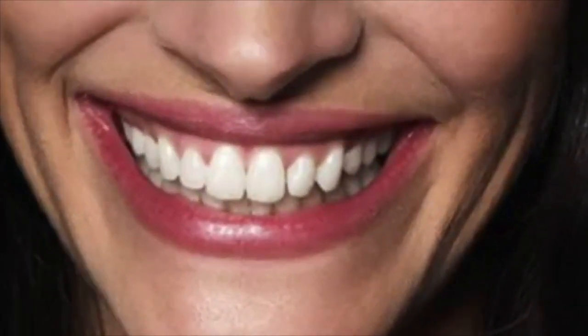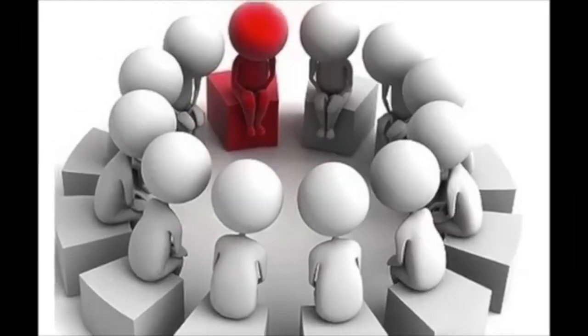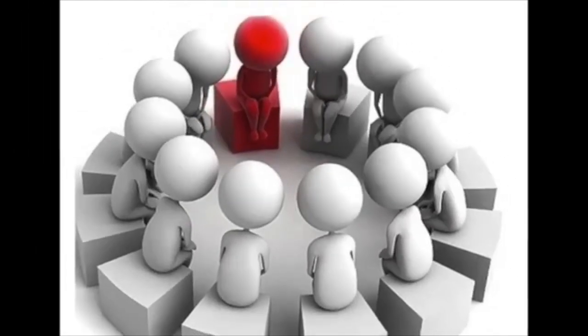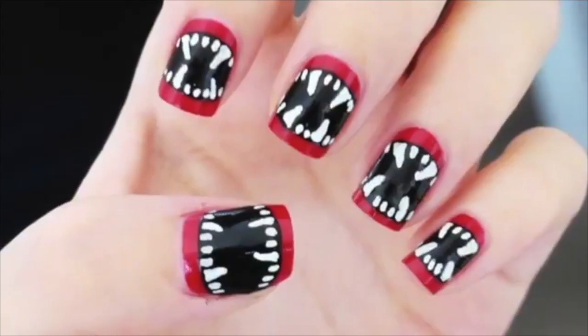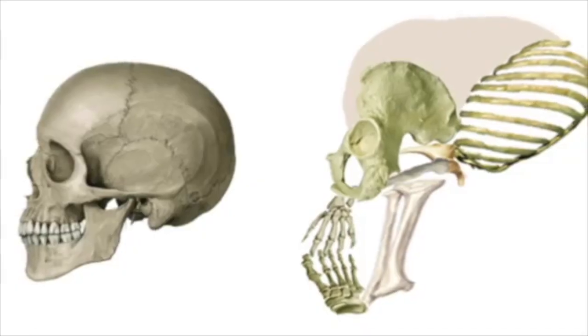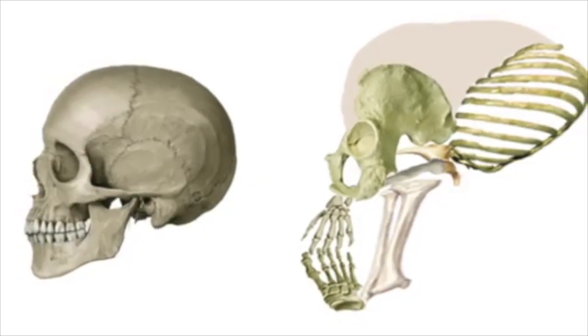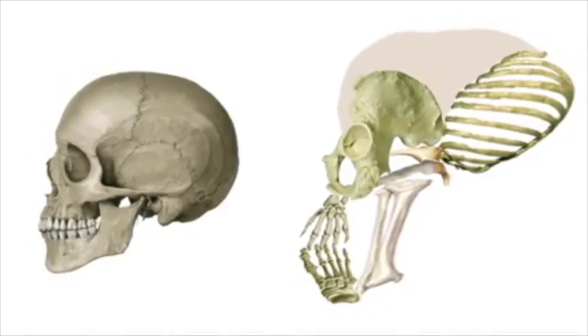Even though the teeth are structures that developed from the ectoderm, I thought it would be a good idea to include them in this catalog. I believe the most obvious counterpart of the teeth are no other than the nails. This is an artistic rendition of the skeleton arranged like the skull, according to the mirror model.